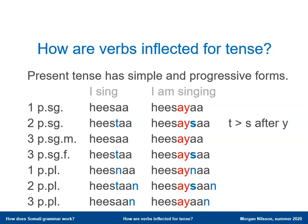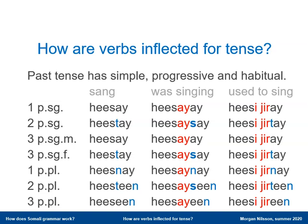Somali also has aspect. There is a simple and a progressive form in the present tense, just like in English 'I sing' and 'I am singing', and the progressive present tense is formed by the addition of 'a' before the other endings. And the same is true for the past tense. There is a simple past like English 'sang' and a progressive past like English 'was singing', and the Somali progressive past tense is also formed by adding the 'a' before the other suffixes.